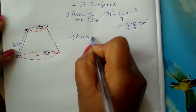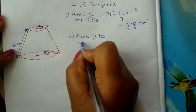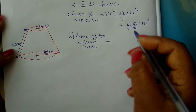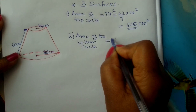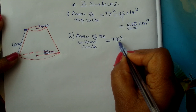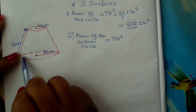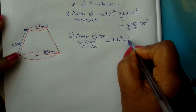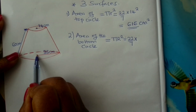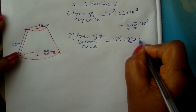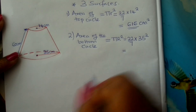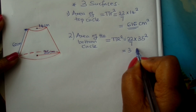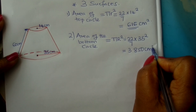What is the area of the bottom circle? The area of the bottom circle is again π r squared. We use a capital R because this circle is bigger than the top one. Therefore this will be 22 over 7 times 35 squared, and you should get 3850 centimeters squared.